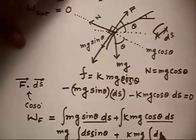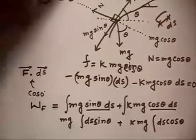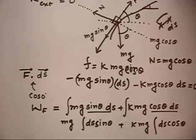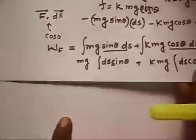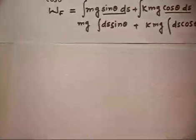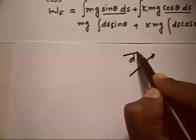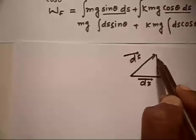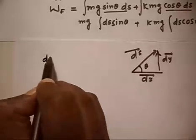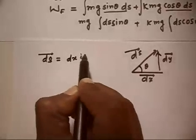We have the integral of cosθ·ds. To understand what these integrals represent: if ds is the displacement vector, it can be decomposed into dx and dy components. The angle is θ, so ds can be written as dx·i + dy·j. Therefore, sinθ·ds corresponds to the vertical component dy, and cosθ·ds corresponds to the horizontal component dx.